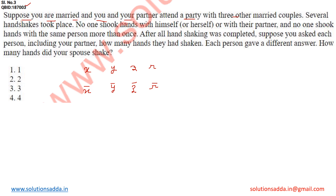After all handshaking was completed, suppose you asked each person — including your partner — how many handshakes they did. Every person gave a different answer. So Y will give a different answer, X̄ will give a different answer, and every person in the party will give a different answer about how many hands they had shaken.